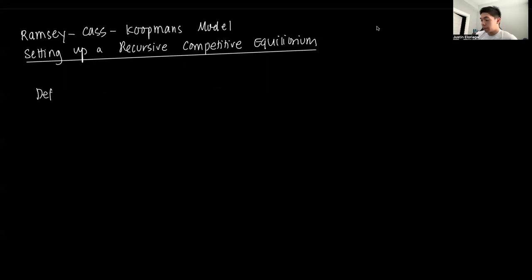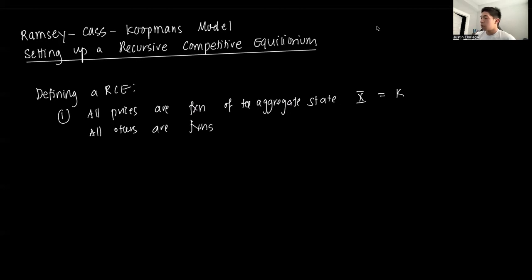Recall, defining a recursive competitive equilibrium: what you need to first do is basically all prices are functions of the aggregate state, the aggregate state X. In our model, the aggregate state was K, capital K. All others are functions of both the aggregate state and individual state.